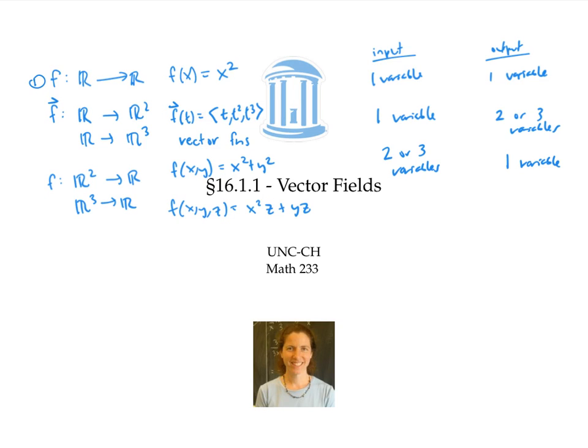So those are the three types of functions we studied so far. And now you can probably guess what the next kind of function is going to be. Well, obviously, it's going to be called a vector field. And it's going to have an input of two or three variables, but it's also going to have an output of two or three variables. So that would be some kind of function that takes, say, R two to R two, or R three to R three.